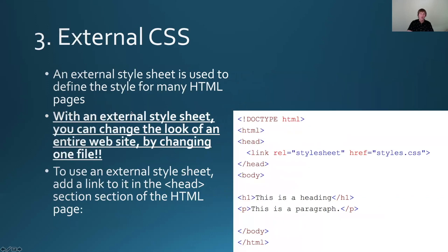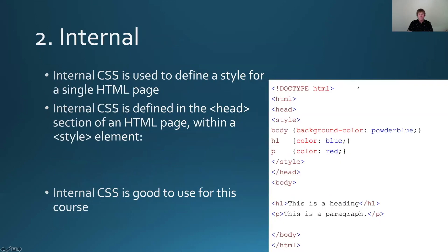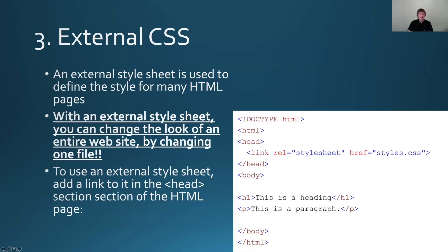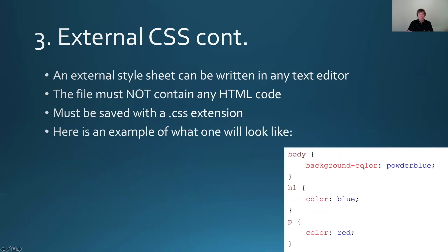Of course, the best way would be external. External is nice because I can use the same styles throughout the whole site. I can put a link here and link the style sheet. It's used to define style for many pages. Inline is a single element, internal is a single page, and external is for many pages. With an external style sheet, you can change the look of an entire website by changing one file — just add the link and all the styles will be applied to the page.